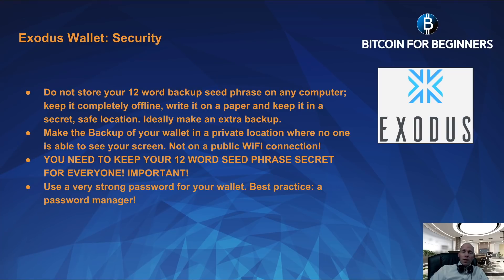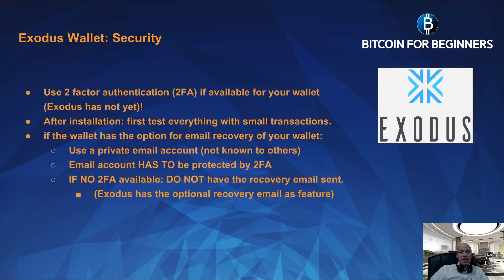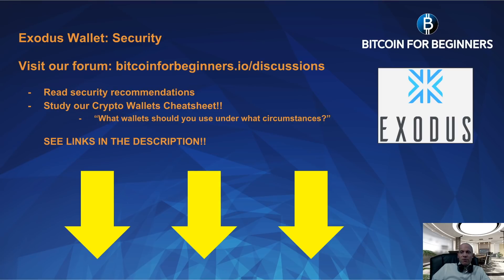Do not do your backup on a public Wi-Fi connection. Keep your 12-word seed phrase secret from everyone — this is very important. Use a very strong password for your wallet; best practice is to use a password manager. If available for your wallet, you should definitely use two-factor authentication — unfortunately Exodus does not have this security feature. After installation, first test everything with small transactions. If the wallet has an option for email recovery, use a private email account that is protected by two-factor authentication. If the email doesn't have two-factor authentication available, do not have the recovery email set up.